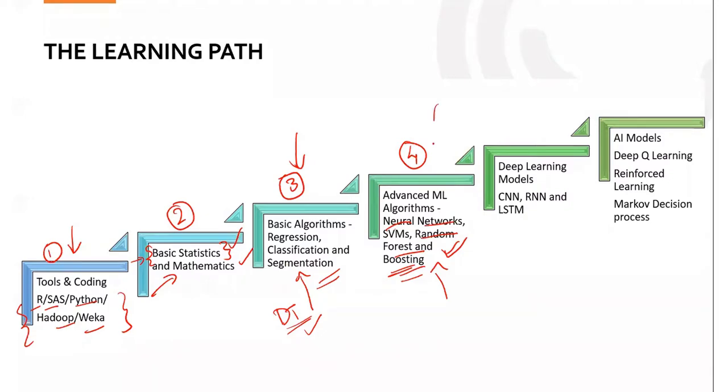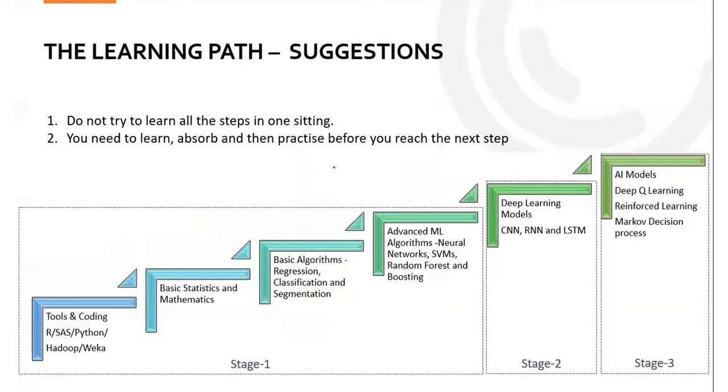The fifth step is deep learning. You take a neural network and make modifications—that becomes CNN (convolutional neural network) used for image processing, or RNN (recurrent neural network) used for time series data analysis. Then comes AI models like deep Q learning, reinforced learning, and Markov decision processes. That's the sixth step. We can divide this whole process into three stages: Stage 1 is ML (machine learning), Stage 2 is DL (deep learning), and Stage 3 is AI or reinforcement learning.